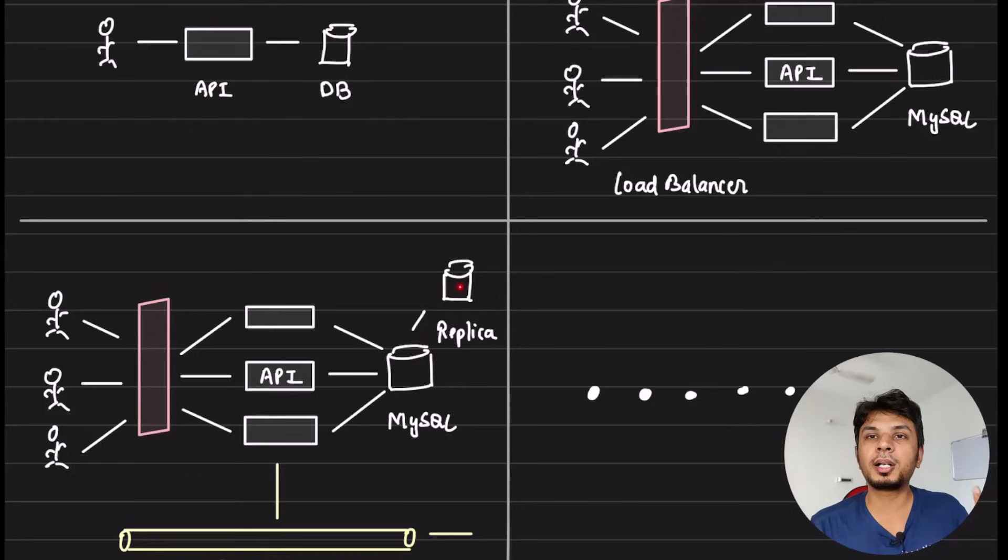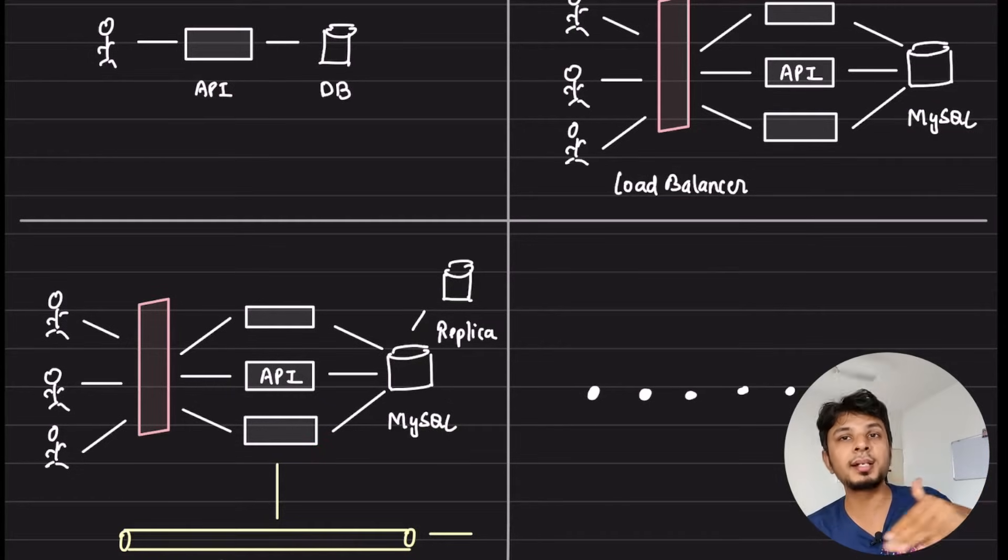Then you think about the next step. This system was working fine but now when I got even more users my system started to choke up. So then you added a read replica to your database to handle the load. Then you thought some workers or some things are happening synchronously which could very well happen asynchronously, so you add a message broker to introduce an asynchronous workflow into your system design.